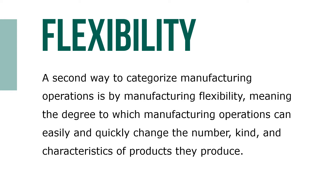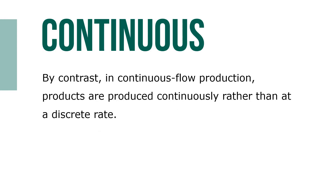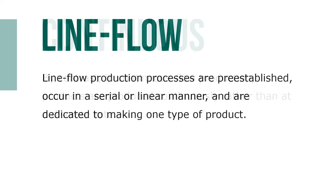By contrast, in a continuous flow production, products are produced continuously rather than at a discrete rate — like a water hose that's never turned off and just keeps flowing. Production of the final product never stops.